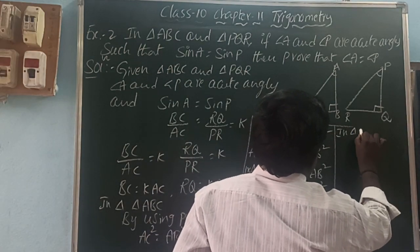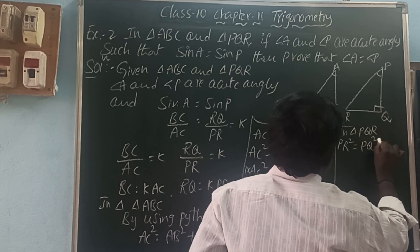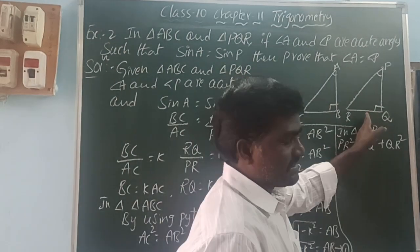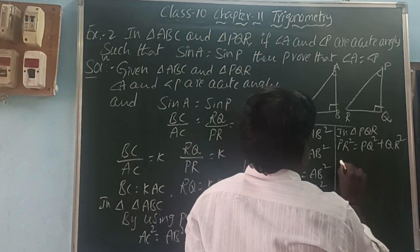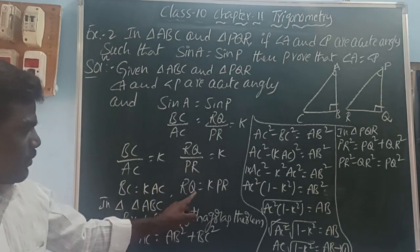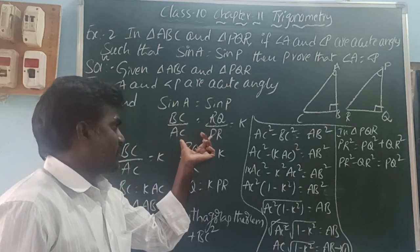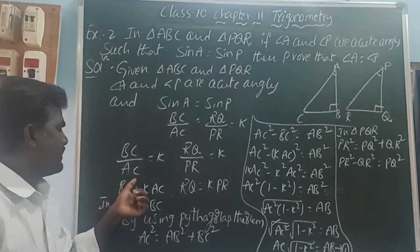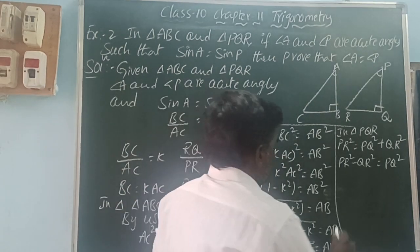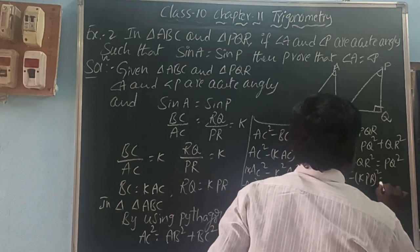Next, in triangle PQR, by the Pythagorean theorem: PR² equals PQ² plus QR². We want PQ, so move QR to the left: PR² minus QR² equals PQ². Now substitute QR equals k·PR, since sine A equals sine P gives RQ over PR equals k. So PR² minus (k·PR)² equals PQ². This gives PR² minus k²·PR² equals PQ², so PR²(1 minus k²) equals PQ².